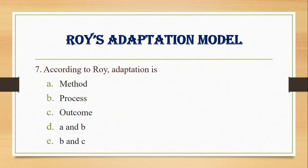Number 7. According to Roy, adaptation is: A. Method, B. Process, C. Outcome, D. A and B, E. B and C. Answer: E. B and C. According to Roy, adaptation is both a process and an outcome.